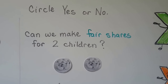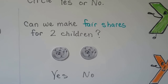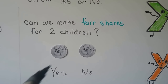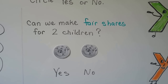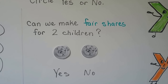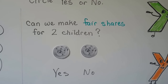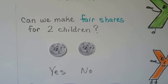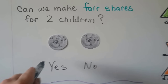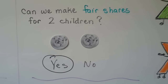Circle yes or no. Can we make fair shares for two children? We have two chocolate chip cookies. Can we separate these so that two children can get a fair share? Yes — they can each get one cookie, and that would be fair.